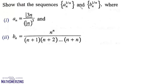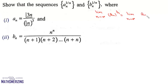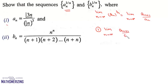Cauchy's second theorem says this limit as n tends to infinity of a_n to the power 1/n is the same as the limit as n tends to infinity of a_(n+1) upon a_n. So for this first one, if we have to calculate this limit, it will be equal to limit n tends to infinity of a_(n+1) upon a_n.